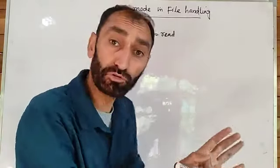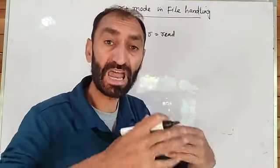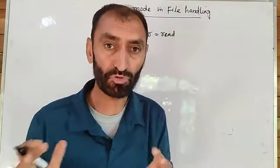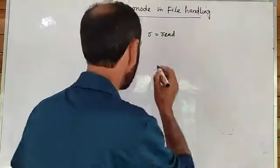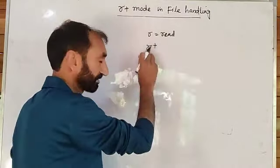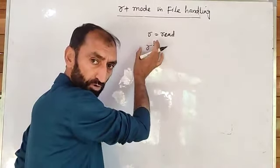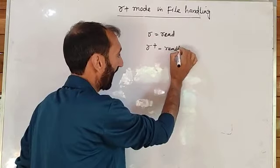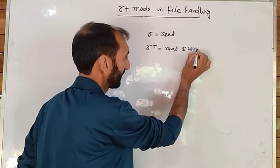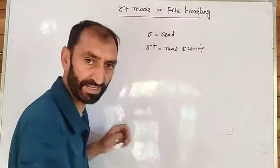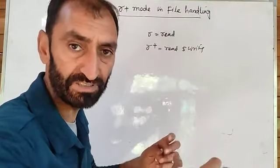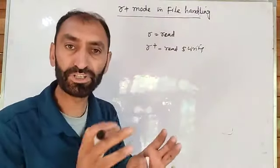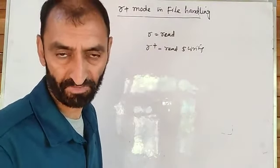But if we want to both read and write the content at the same time, we should open the file in R plus mode. If we open the file in R plus mode, that means we can read as well as write to the file — we can read the contents of the file and we can write something to the file. So R plus mode is used for both reading and writing to the file.